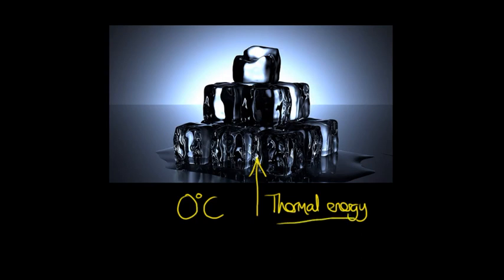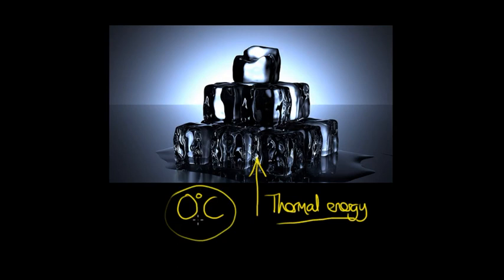So, for example, if you were to add thermal energy to ice, and if that ice is at a temperature of zero degrees Celsius, then that's its melting point. Any thermal energy that we put in to the ice will not raise the temperature anymore.